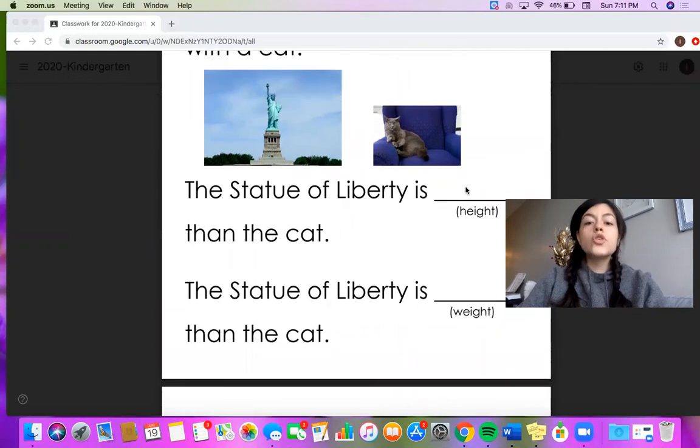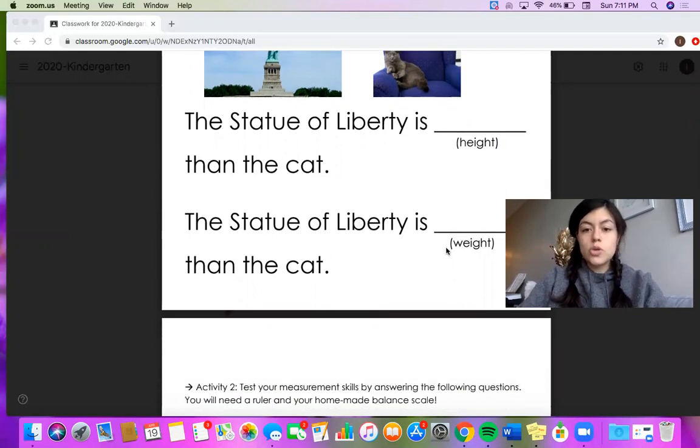Now you'll notice under the first blank spot it says height and under the second blank spot it says weight. So you need to fill in these sentences by using in the first sentence a height word. So you'll say the Statue of Liberty is either shorter or taller or longer than the cat. And in the second sentence you need to put in a word for the weight vocabulary. So your answer would either be the Statue of Liberty is lighter than the cat or the Statue of Liberty is heavier than the cat.